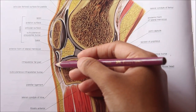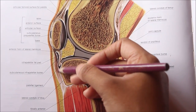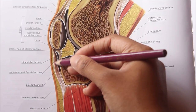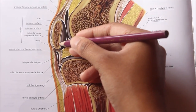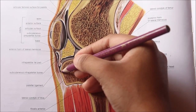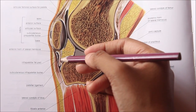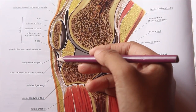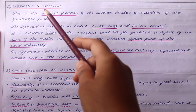The ligamentum patellae is the central portion of the common tendon of insertion of the quadriceps femoris. It is about 7.5 centimeters long and 2.5 centimeters broad. It is attached above to the margins and rough posterior surface of the apex of the patella, and below to the smooth upper part of the tibial tuberosity. The ligamentum patellae is related to the superficial and deep infrapatellar bursae and to the infrapatellar pad of fat.